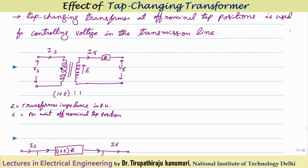The advantage of providing tappings on the high voltage side is that the current is less, so sparking will be less when changing. Also, on the high voltage side the number of turns are more, so changing one turn allows fine tuning of the voltage. That is why tapping changes are always provided on the high voltage side.